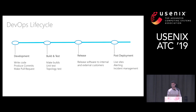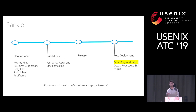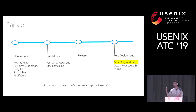Orca basically operates in the post-deployment phase. This is part of an Uber project called Sankey that we have been working on for a couple of years at Microsoft, which provides various tools using AI, ML, and information retrieval techniques to make each phase of the software development lifecycle better. Orca is one of the tools we built to aid post-deployment stakeholders.